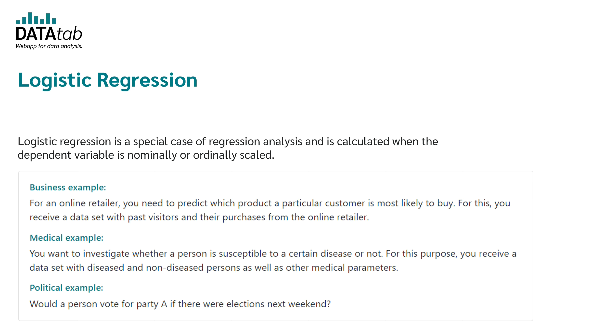The third example is a political example. Your question could be would a person vote for party A if there were elections next weekend. All of these examples have in common that in each case the dependent variable has the characteristics yes or no.